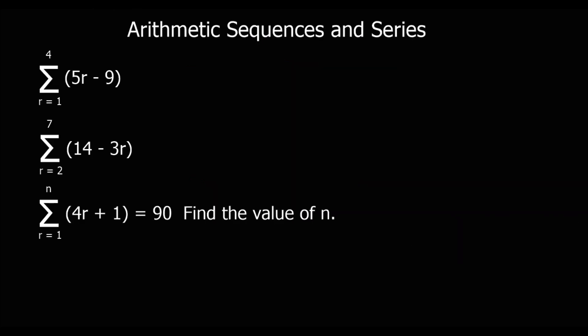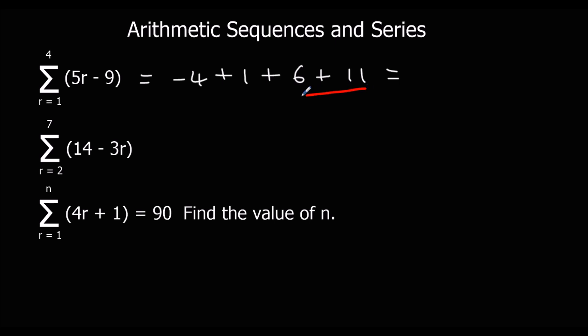Here are a few more practice questions — see if you can figure out the sum for the first two, and n for the last one. For the first one, starting with r equals one going up to four: five ones take away nine is minus four; five twos take away nine is one; fifteen take away nine is six; twenty take away nine is eleven. Adding them up: minus four plus one plus six plus eleven equals fourteen.